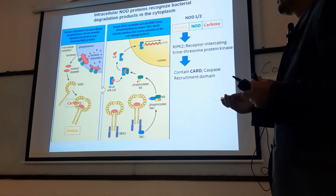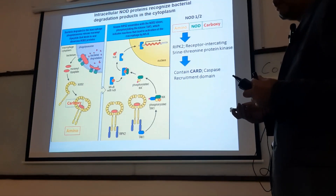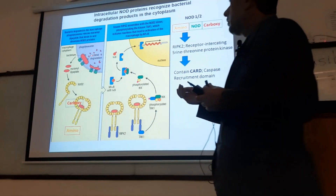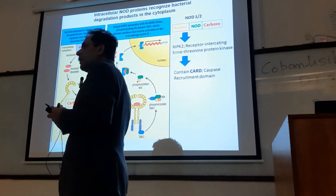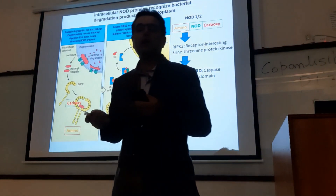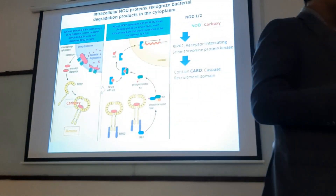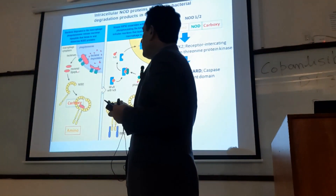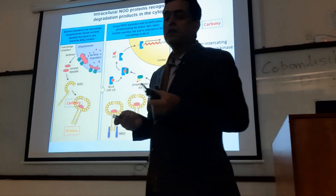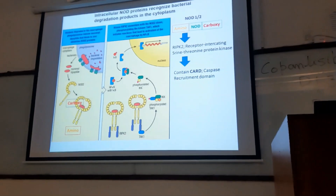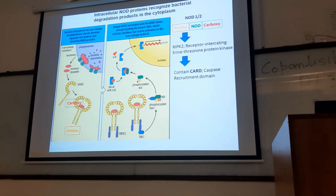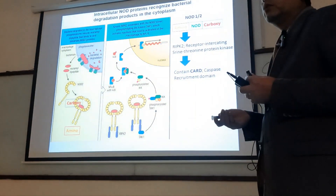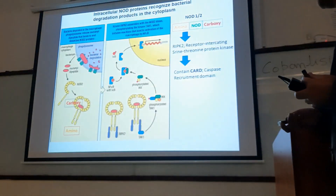Certain degradation products of the bacterium can be recognized by receptors that are inside the cell, inside the macrophage. For instance, muramyl dipeptide, which is part of most bacterial cell walls, is recognized by the NOD-like receptors — specifically NOD2.